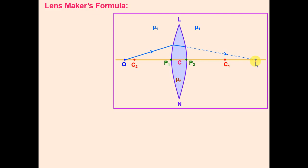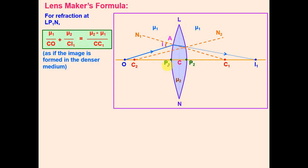The second surface is actually present, so refraction also occurs there. I1 acts as a virtual object for the second surface, and I is the final image. For the first surface (object in rarer medium, image in denser medium), we apply the previously derived expression. For the second surface, I1 is the virtual object in the denser medium and I is in the rarer medium.